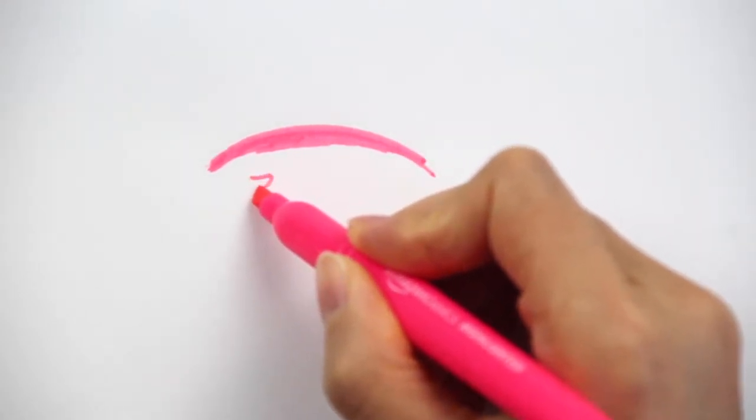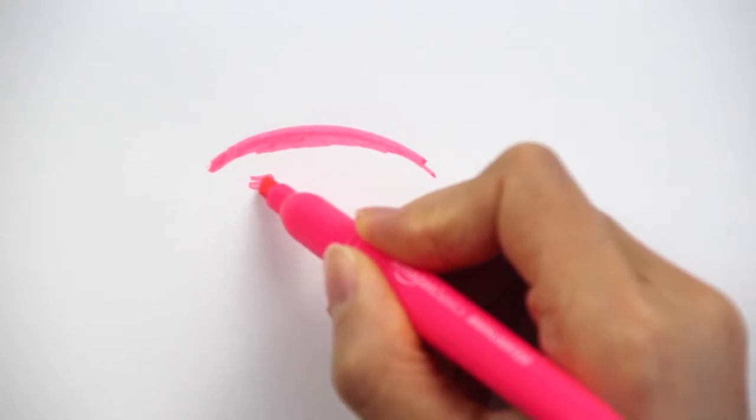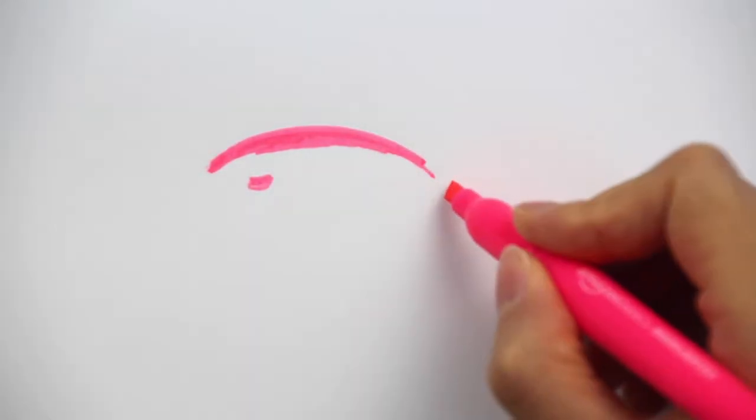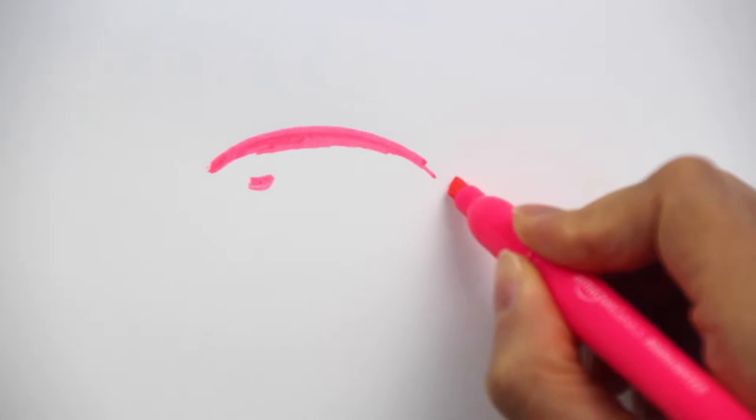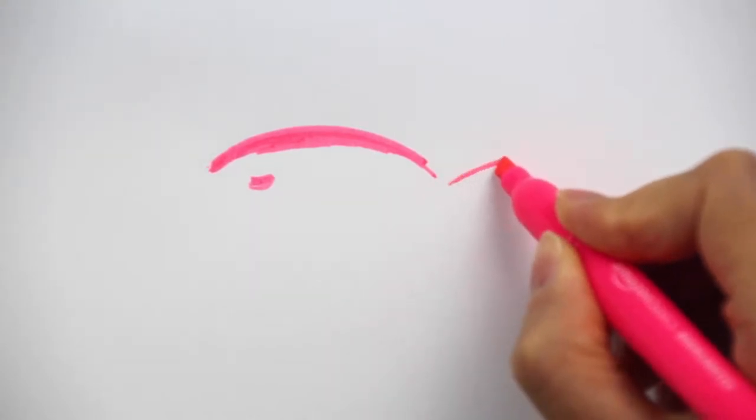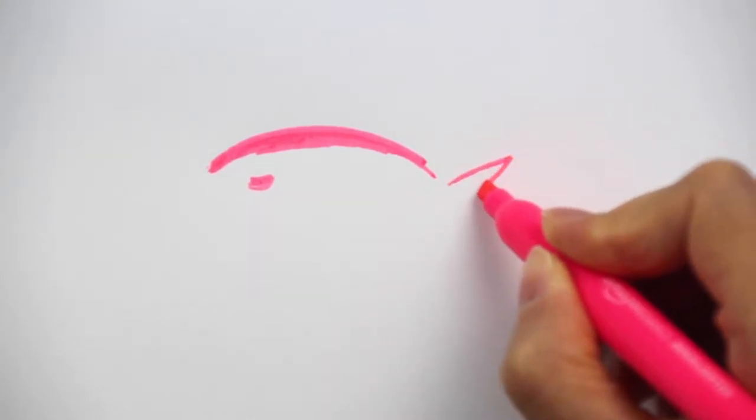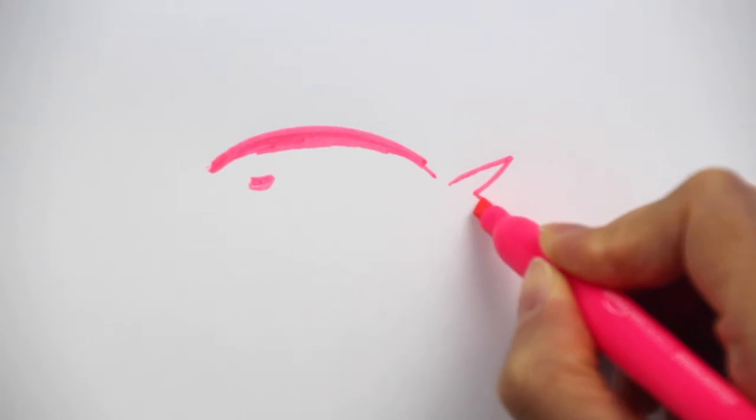Then I'm going to add a little tiny fin and then also the tail fin. It's important to notice that the tail fin for the mackerel fish is actually very sharp and pointing, so like this make sure it's very sharp.